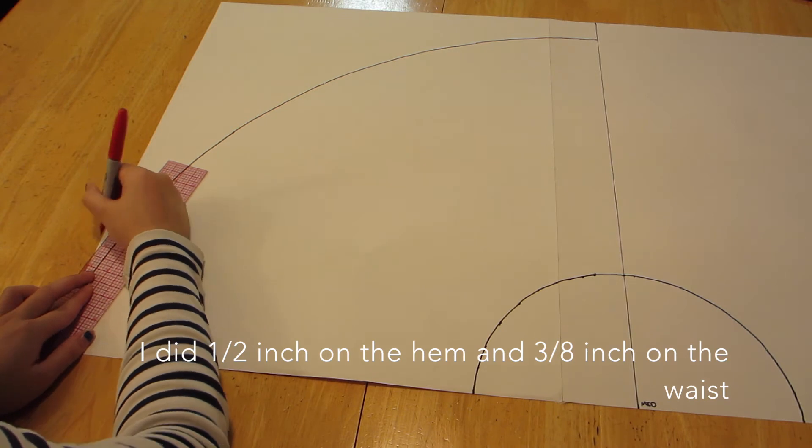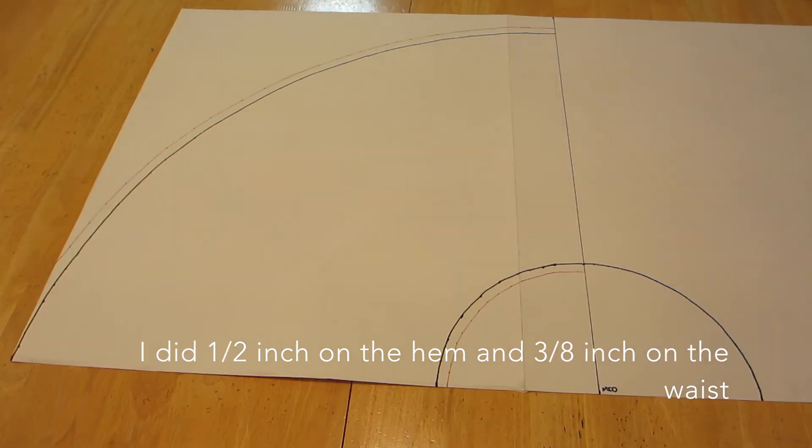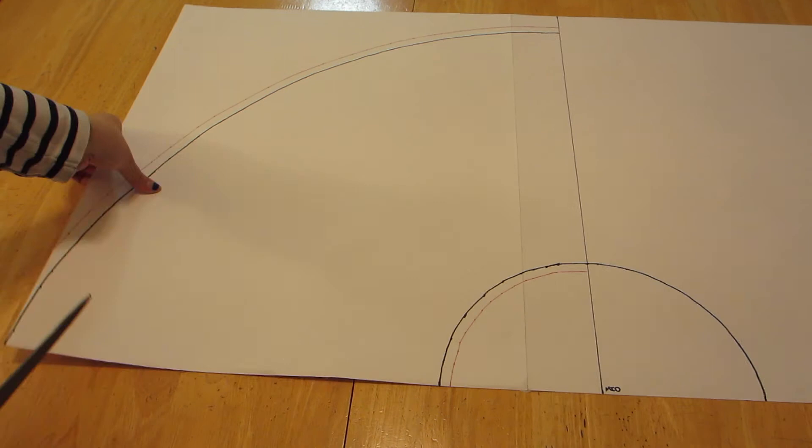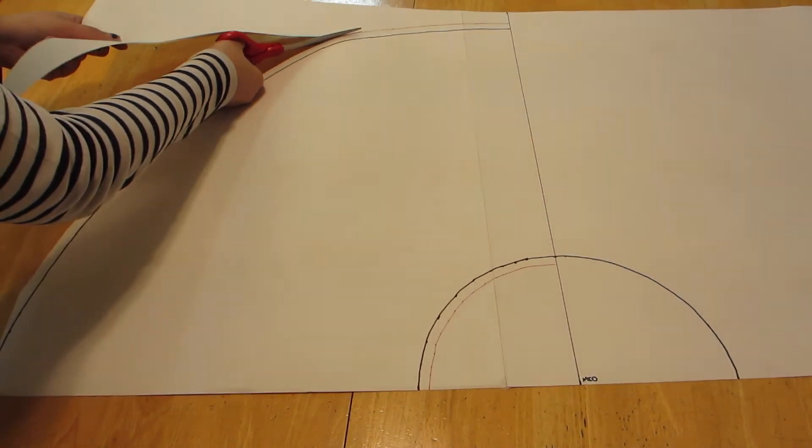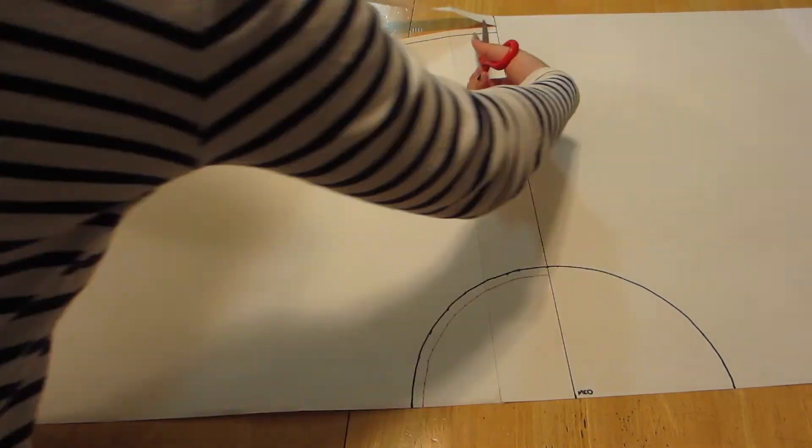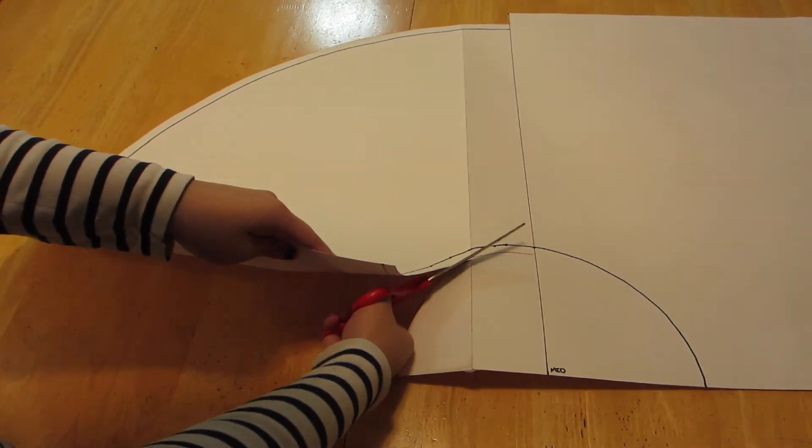Next, you're going to want to add your seam allowance to the bottom and the top of your circle pattern. Next, you can cut out half of your pattern and then just fold it over and trace it so that you can get a perfect copy on the other side.